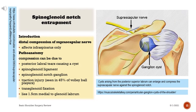Spinoglenoid Notch Entrapment. Introduction: distal compression of the suprascapular nerve, affecting infraspinatus only. Pathoanatomy: compression can be due to posterior labral tears causing a cyst, the spinoglenoid ligament, a spinoglenoid notch ganglion, or traction injury — seen in 45% of volleyball players.